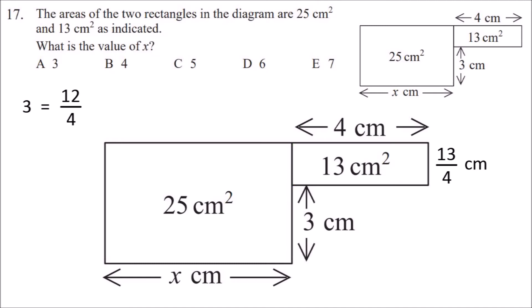3 is equal to 12 over 4, and so 13 over 4 add 12 over 4 equals 25 over 4.